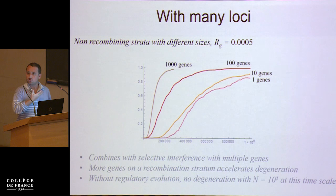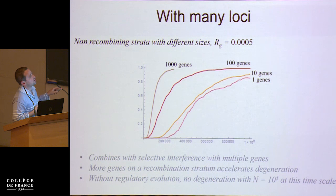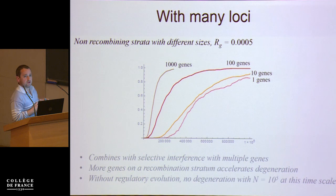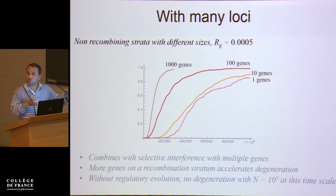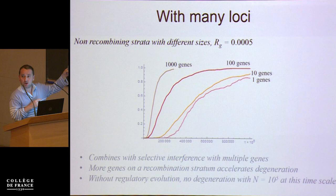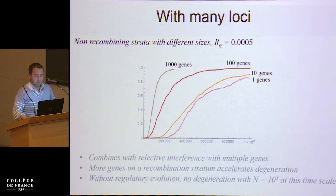You may ask what happens when you've got many loci — all those results were for one locus. With one gene you get a certain probability of complete degeneration, as I showed previously. With 10 genes in a stratum it goes faster; with 100 it goes even faster; and with 1000 genes it's even faster. So this process works in combination with selective interference — if you add selective interference into the picture, things go even faster. Also important to note: in the absence of regulatory evolution in the simulation, nothing would occur under those parameters even with many thousands of genes.